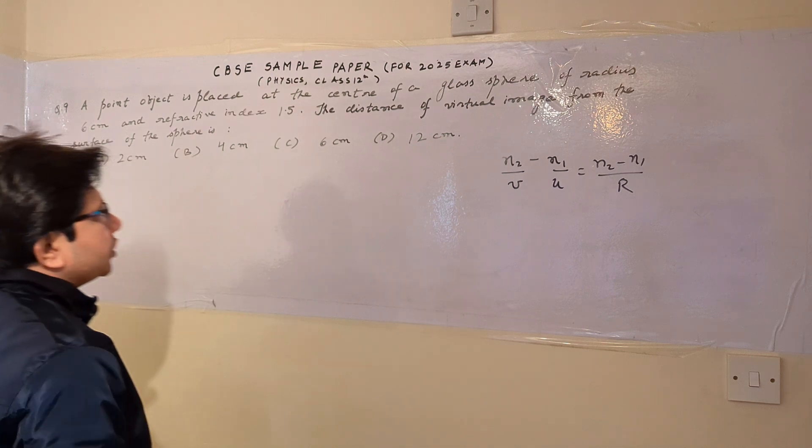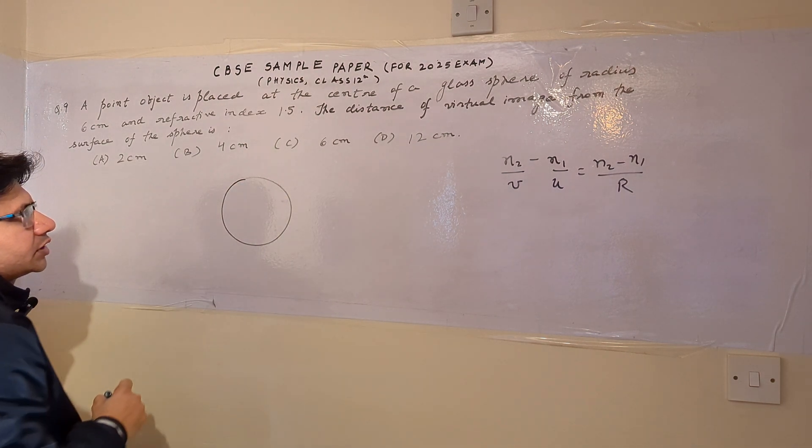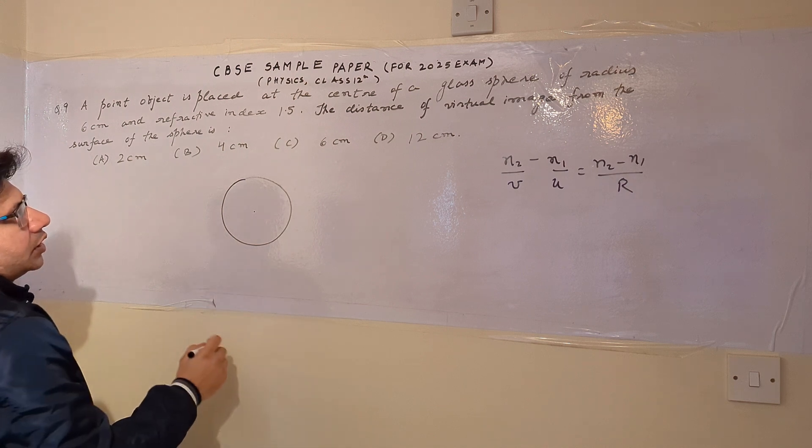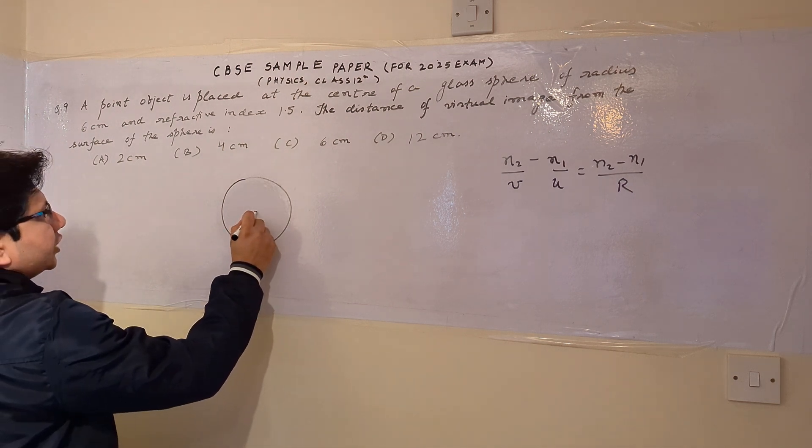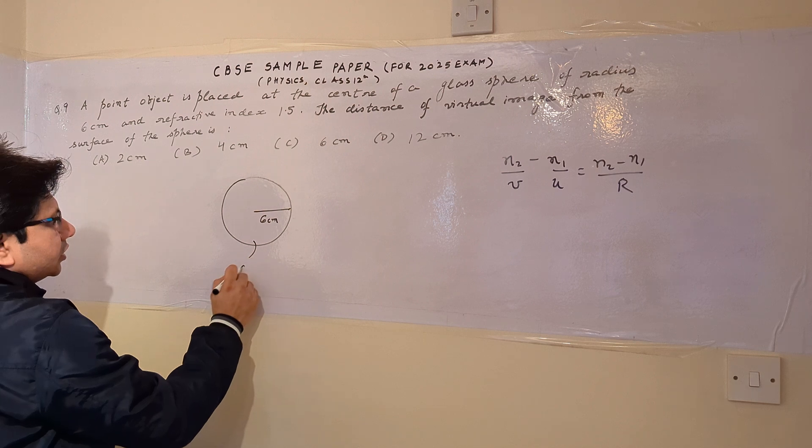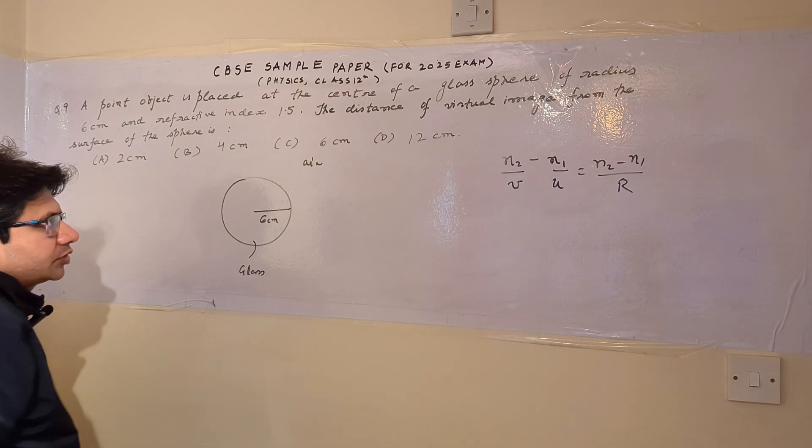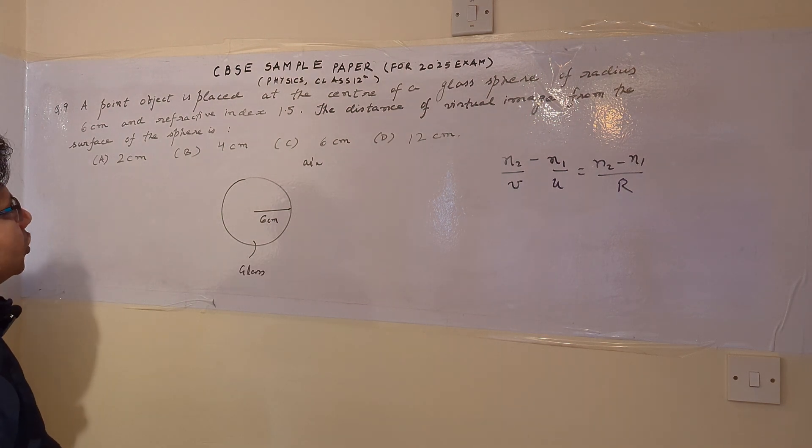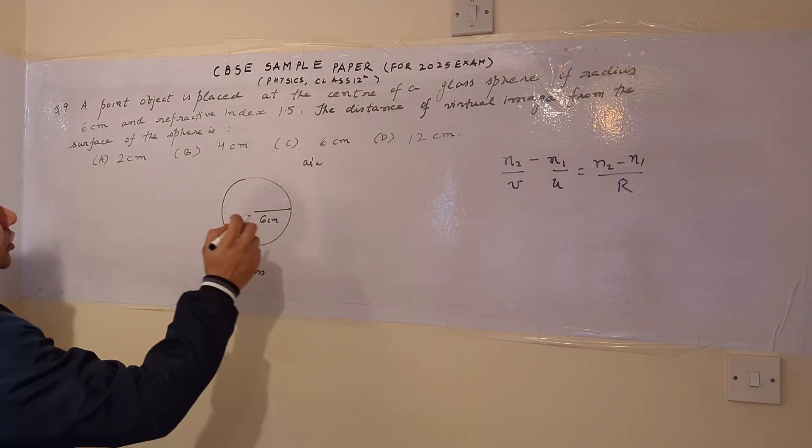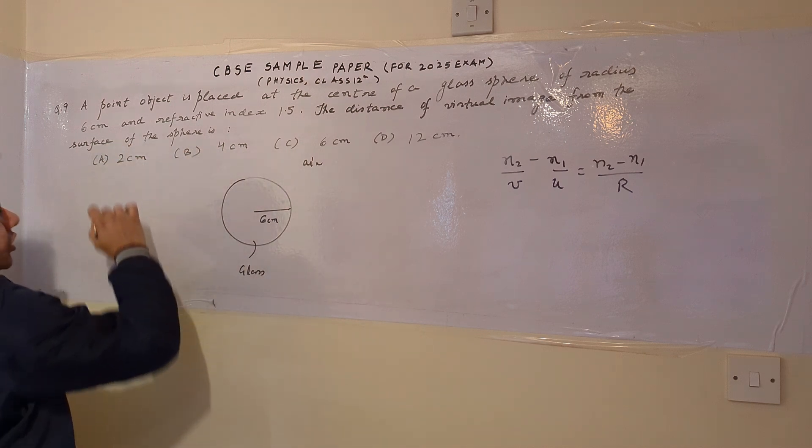Now in this situation, there is a glass sphere having a radius of 6 centimeters. This is the glass sphere and the surrounding medium is air. It is placed in air. So the object is at the distance of 6 centimeters.